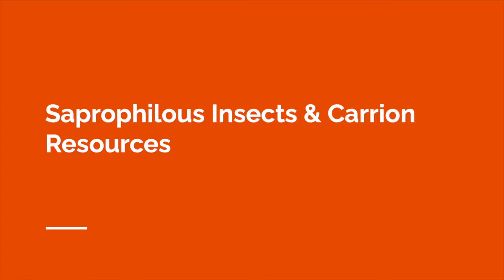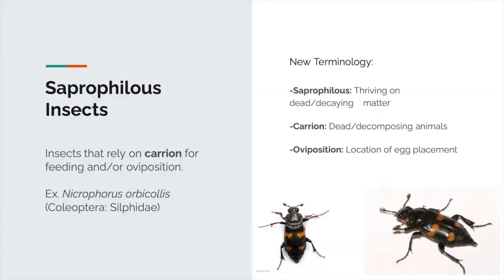We're going to begin our discussion by talking about what saprophyllic insects are, as well as carrion resources and how the two are incredibly dependent on one another. Saprophyllic insects are insects that rely on carrion for feeding and oviposition — basically, these insects rely on dead or decaying animals or matter for nutritional resources, as well as a site to lay their eggs.